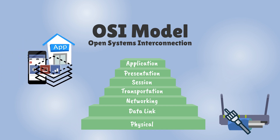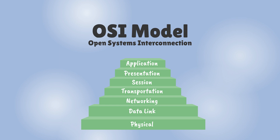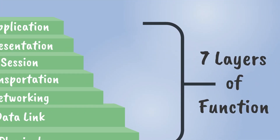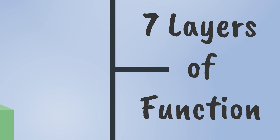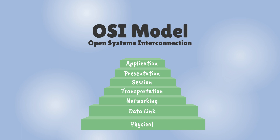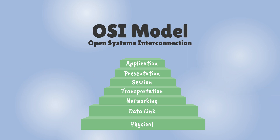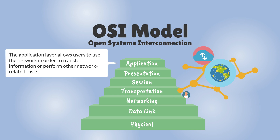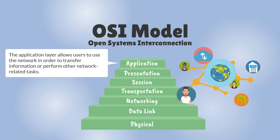IT specialists and developers utilize the seven layers of function to better understand how data is sent and received over a network. The seven layers of the OSI model are: the application layer, the presentation layer, the sessions layer, the transport layer, the network layer, the data link layer, and the physical layer.